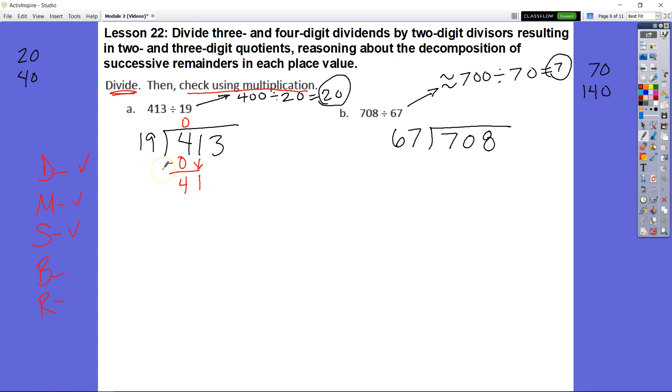So now I have 41. I know that two groups of 20 would be 40. So I know that two groups of 19 is going to be just under 40. So I'm going to put my 2 up here, say 41 divided by 19 is 2. 2 times 19, well 2 times 9 is 18 and 2 times 10 would be 2 tens plus 1 ten equals 38.